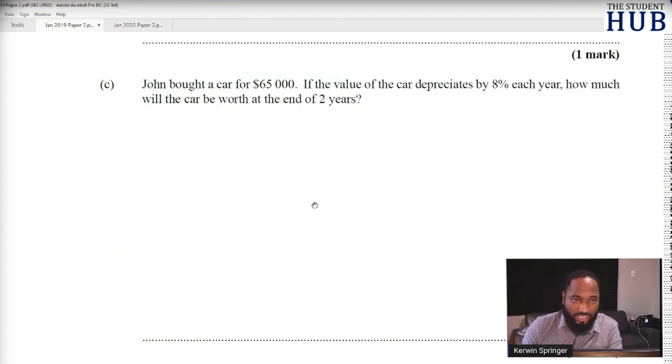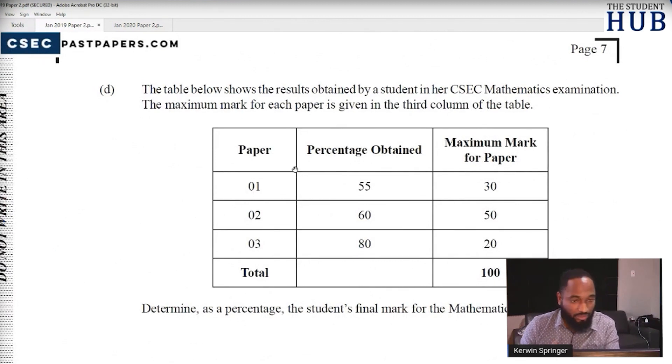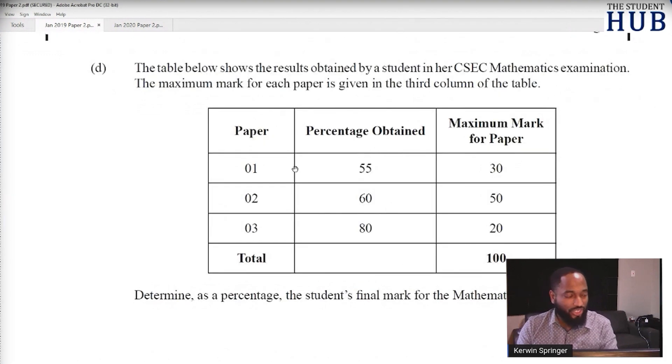Let's finish off today's class by looking at the last part of question one from January 2019 paper two. This is a percentages question. In this case, we had a lot of wrong answers with people adding up these numbers. These numbers are not to add up. We are asked to determine their final percentage. 55% of this, 60% of that, 80% of that would give us the individual marks that they scored.